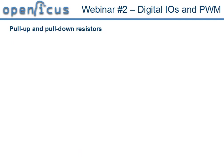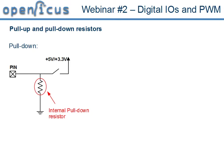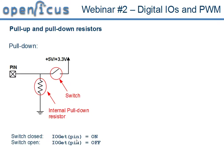Now let's see what pull-up and pull-down resistors are. The pull-down is an internal resistor that ties the pin to ground. If we use a switch and tie it to 5V or 3.3V, when the switch is closed the pin will be ON because it's tied to 5V, and when the switch is open it is OFF because it's tied to ground by the internal pull-down resistor. So the pin is never floating — it's either ON or OFF.